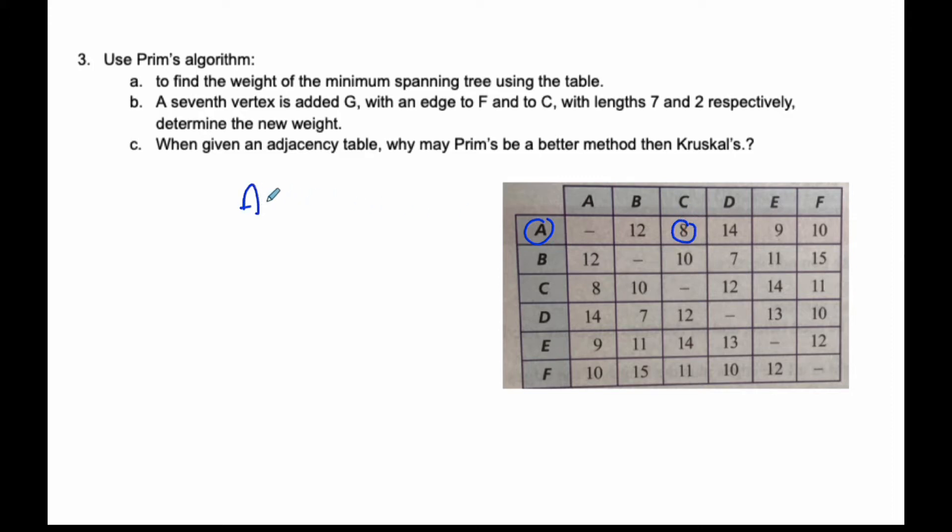I'm going to start off with AC, which is 8. I'll draw my AC, which is 8. Then I'm going to scratch out all of C and scratch out all of A. I'm going to circle here. This is my first one. Here is my second one.